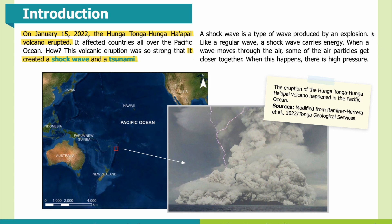A shock wave is a type of wave produced by an explosion. Like a regular wave, a shock wave carries energy. When a wave moves through the air, some of the particles get closer together, creating high pressure. Here you can see the eruption of the Hunga Tonga-Hunga Ha'apai volcano that happened in the Pacific Ocean.